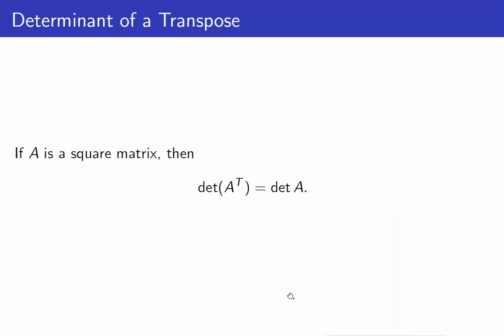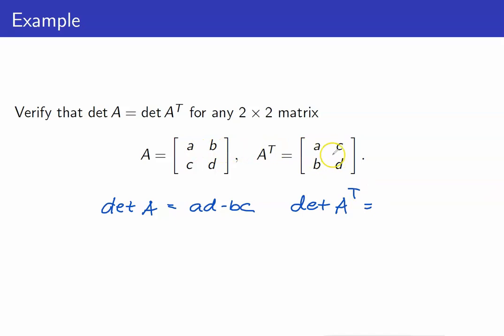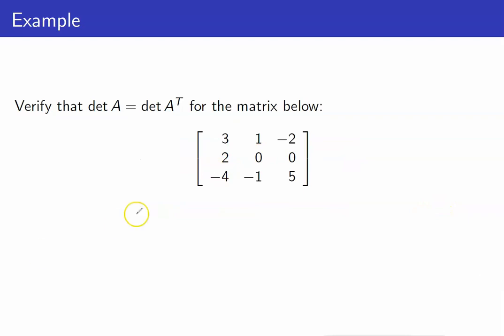Here is our first result: the determinant of the transpose of a matrix is equal to the determinant of the original matrix. Let us verify this for a 2 by 2 matrix. The determinant of A is equal to ad minus bc, and the determinant of A transpose is still equal to ad minus bc.